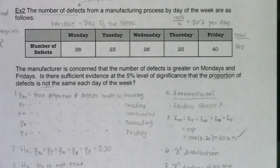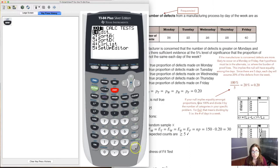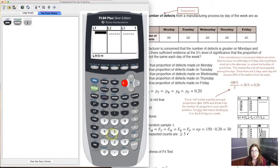Now let's look at how TI-84s can do the chi-squared GOF test. None of the TI-83s can do it, but most TI-84s can. If yours can't, use the TI-83 method from earlier. Go into your lists: put observed counts into L1 and expected counts into L2. So L1 gets 36, 23, 26, 25, 40, and L2 gets 30 five times — since out of 150 defects, 30 per day is expected if all things are equal.